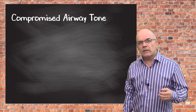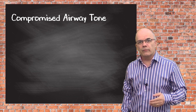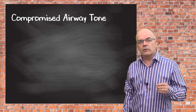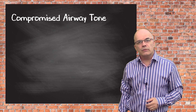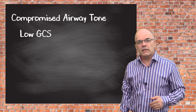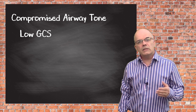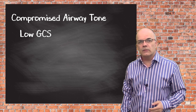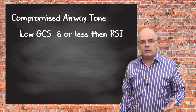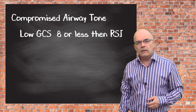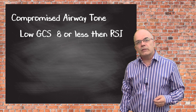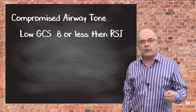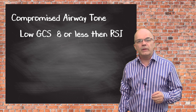The airway tone may be compromised for a number of reasons. One of the main reasons is that the patient's neurological status is reduced, i.e. their GCS has fallen. It is commonly taught that if the GCS is 8 or less in a trauma patient, then they should be intubated to protect the airway. This rule is often quoted in those patients who have not suffered from trauma, for example those patients who have been poisoned.